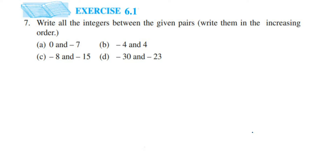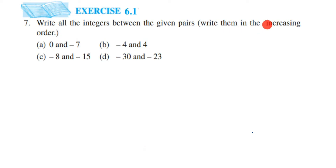Hey everyone, here I am doing exercise 6.17th question. This is from the integer chapter of class 6. The question here is: write all the integers between the given pairs, write them in increasing order. So we have to write the numbers in increasing order.